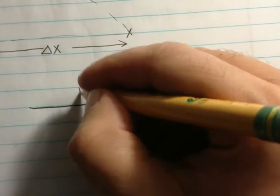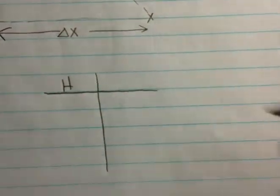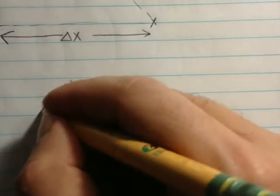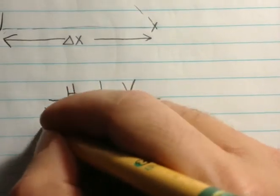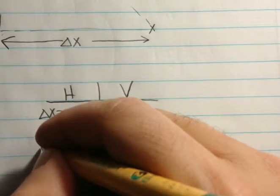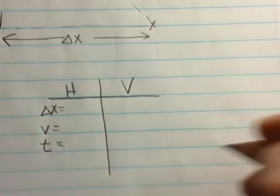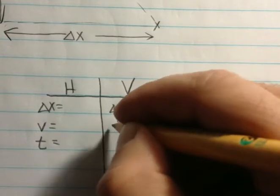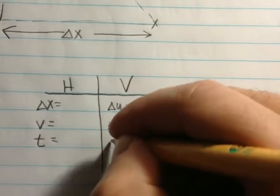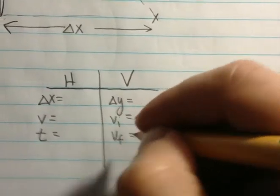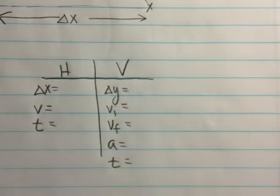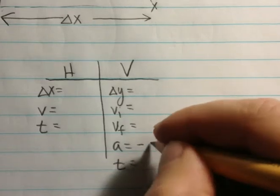The way you're going to solve this problem is you're going to start out by making a table. In the table you want to have two different parts: one part tracks the horizontal motion of the projectile and the other part tracks the vertical motion. On the horizontal side you're going to track the range, the speed, and the time. On the vertical side you're going to track the vertical displacement, the initial vertical speed, the final vertical speed, the acceleration, and the time.